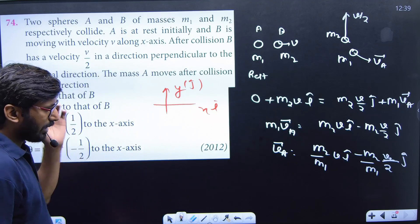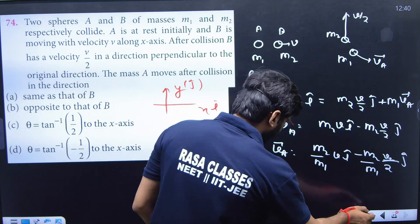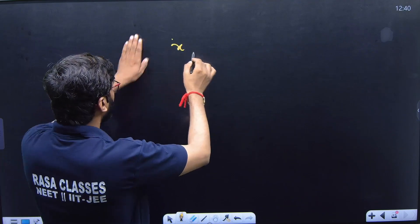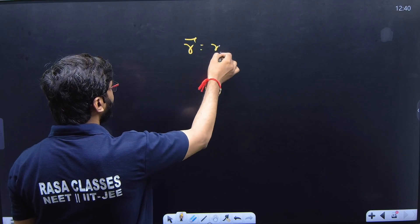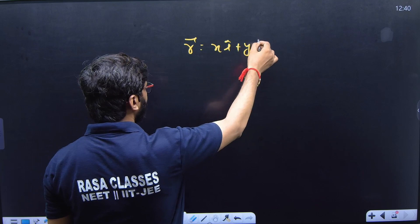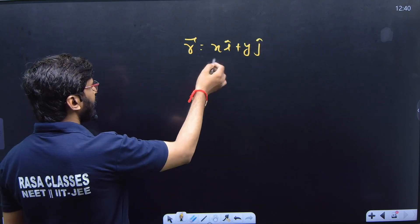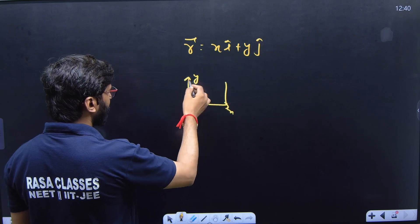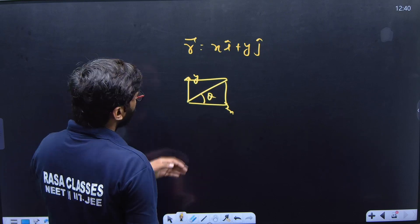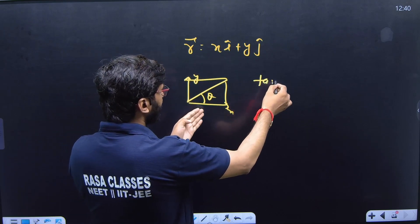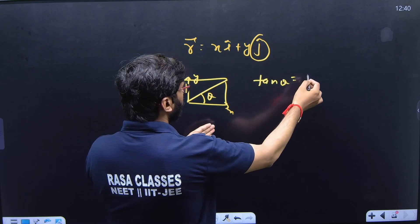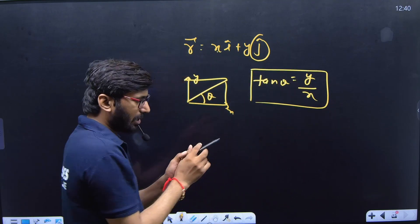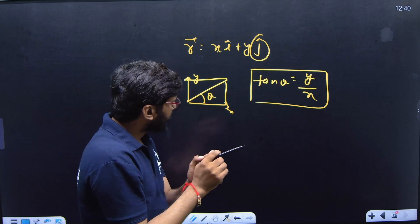Now, to find the direction of vA, recall from the resolution of vectors in 2D: if a vector is written as x î-cap + y ĵ-cap, then tan θ equals the coefficient of ĵ divided by the coefficient of î. We covered this deeply in the vectors chapter — you can also find it in NCERT under resolution of vector in 2D.